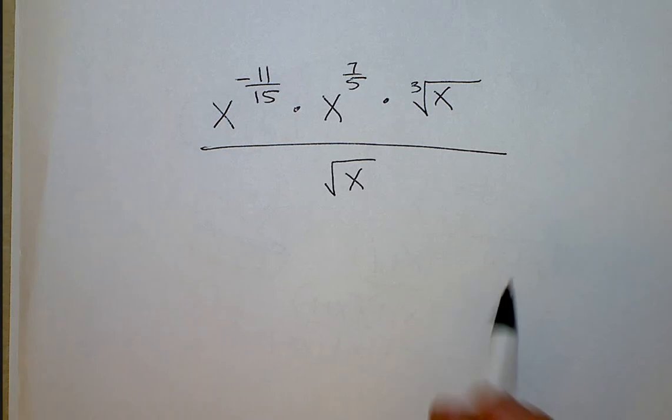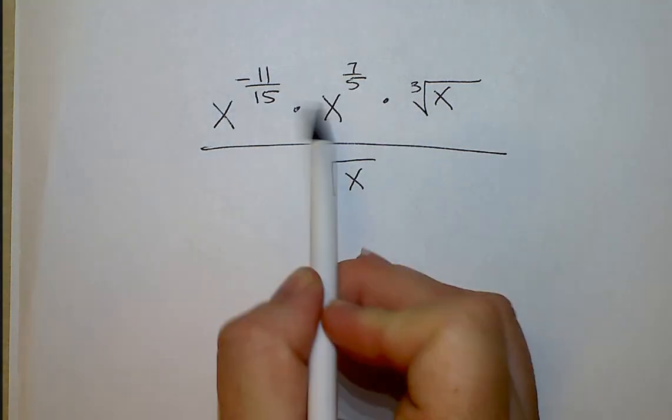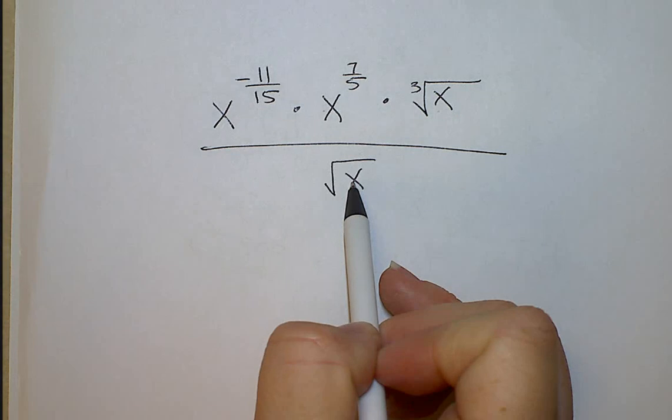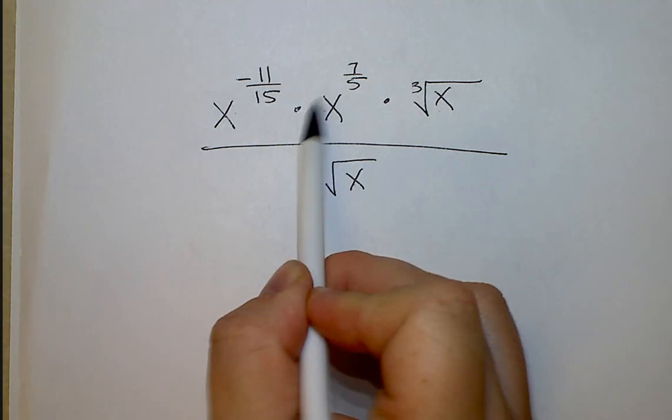Simplify. To do this, notice we have the same base on top that we have on the bottom. When you have the same base and you're multiplying, you're going to add the exponents.